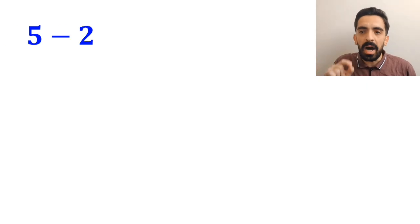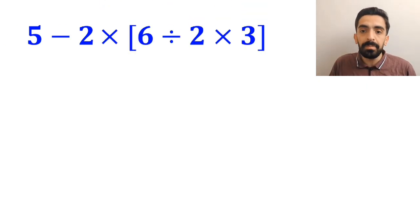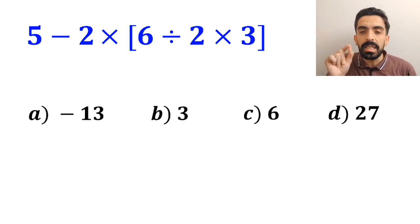What is the value of the expression 5 minus 2 times open bracket 6 divided by 2 multiplied by 3 closed bracket? Which option do you think is the correct answer to this question?